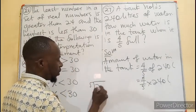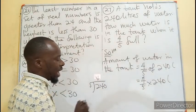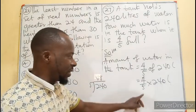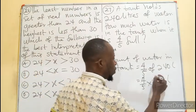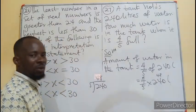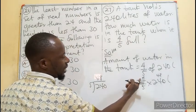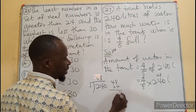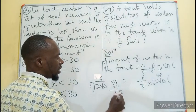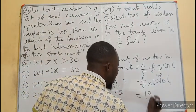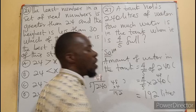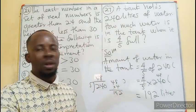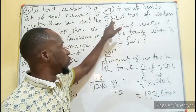5 goes into 240 forty-eight times. 48 will now multiply the top, which is 4. So 48 times 4, I believe we have 192. So we have 192 liters of water in the tank at this point when it is 4/5 full.